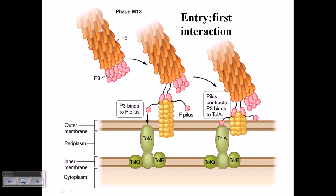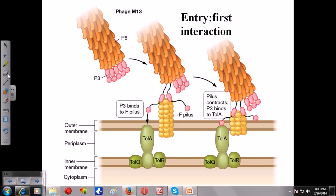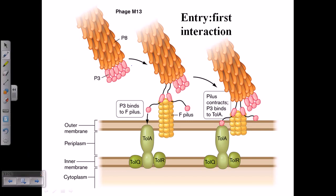Here we can see the picture in detail. This is the M13 phage and its first interaction during entry. We can see p3 has two domains outside — n1 and n2. Using n1, it is interacting with the TolA receptor of the membrane, and using n2 it is interacting with the F-pili. Both these interactions are going on simultaneously, and as the interaction proceeds they are pushing the F-pili down a little bit, bringing the M13 phage into close proximity to the bacterial cell surface.